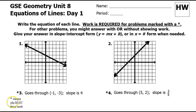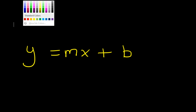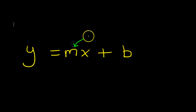In this video, I will show you how to write the equation of a line given various types of information, like a graph, a point and a slope, or two points. Everything we do today will be based on the model equation y equals mx plus b. In this form, whatever is right here will be the slope, and whatever we have right here will be the y-intercept.